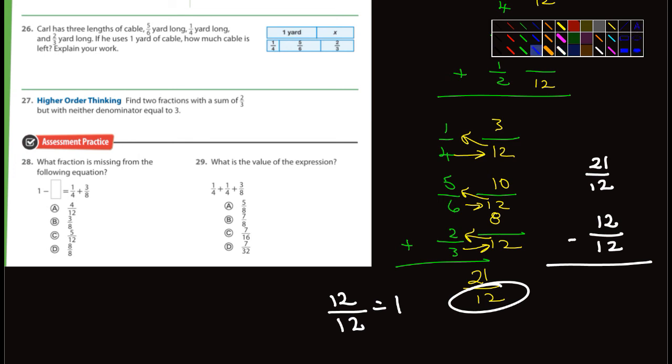Kind of a complicated problem, but I think you guys can do that one. All right. Yeah, just about done here. 27. Find two fractions with a sum of two thirds, but neither with a denominator equal to three. So you have to come up with a denominator that's not three. So sum, we're talking about addition there. So two fractions that have a solution of two thirds. And then 28 and 29 looks like multiple choice. You guys can do those on your own. So that's it. And I will see you guys tomorrow.